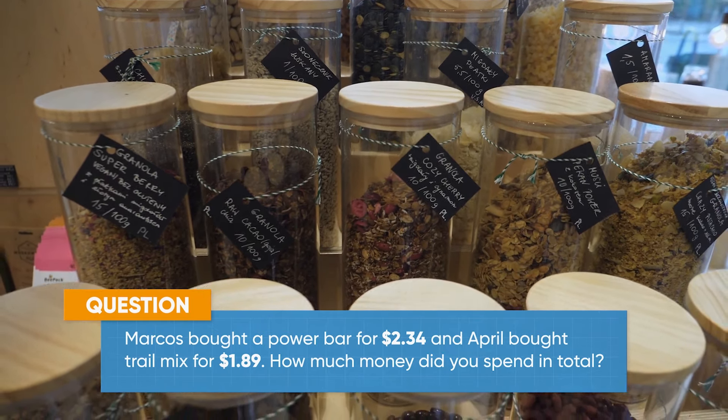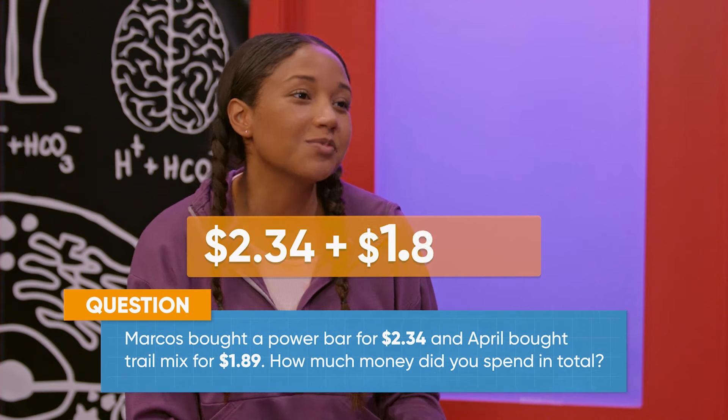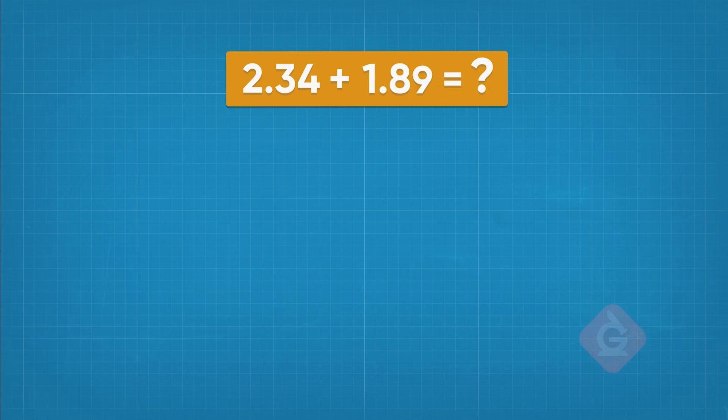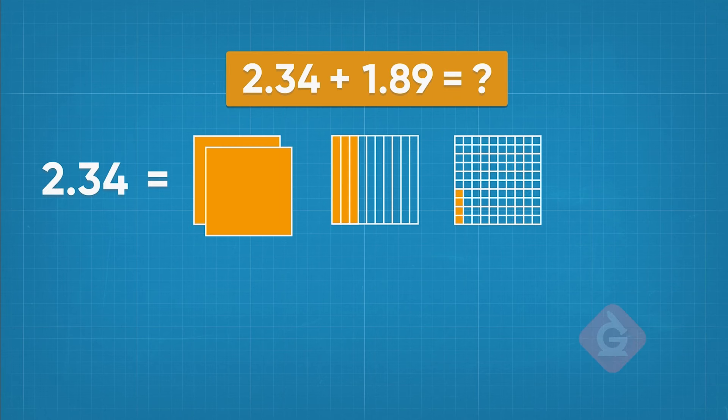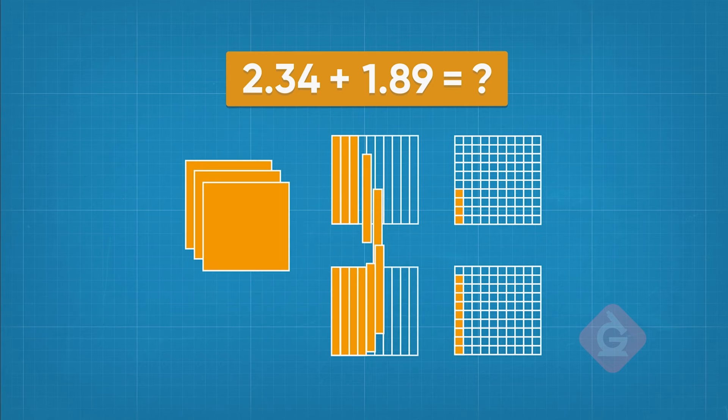We can find out by adding $2.34 plus $1.89. Let's show both of these numbers using a model. Now, we just add these together by combining them.